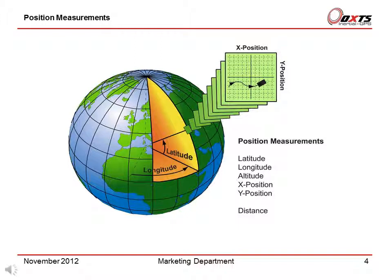The position measured by the RT is in the WGS 84 coordinate system. The outputs are latitude, longitude and altitude in this coordinate system. Conversions to other coordinate systems may be required — for example, OSGB36 in the UK. The RT can also output positions in meters on a local grid, but only if the local coordinates are defined before use.